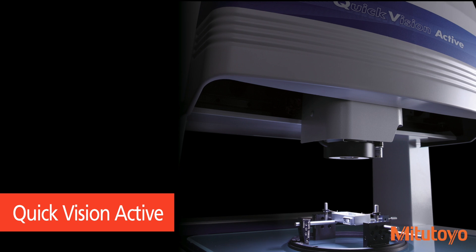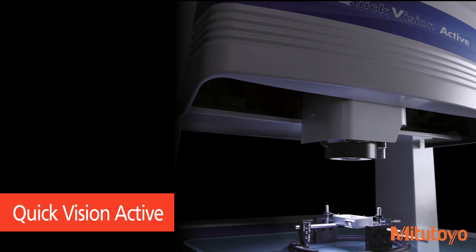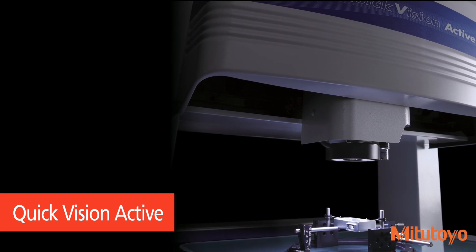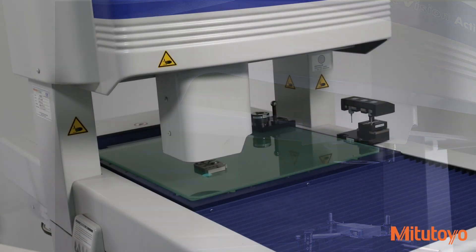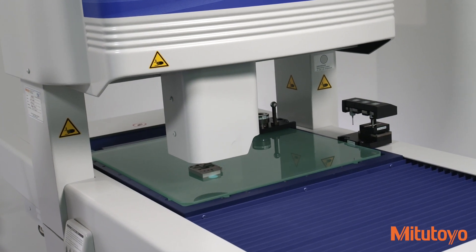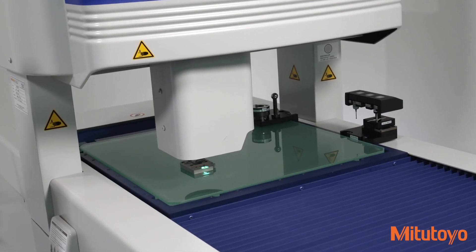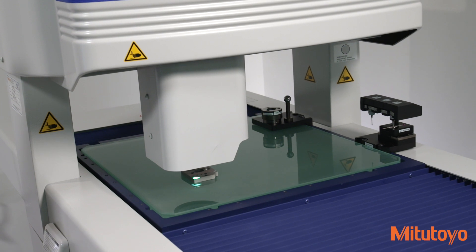Mitsutoyo's Quick Vision Active is a fully-featured and automatic high-speed, high-accuracy, high-throughput automated vision measurement system in a space-saving ergonomic design. The QV Active's intelligent, automated feature processing tools allow for highly efficient, unattended inspection.